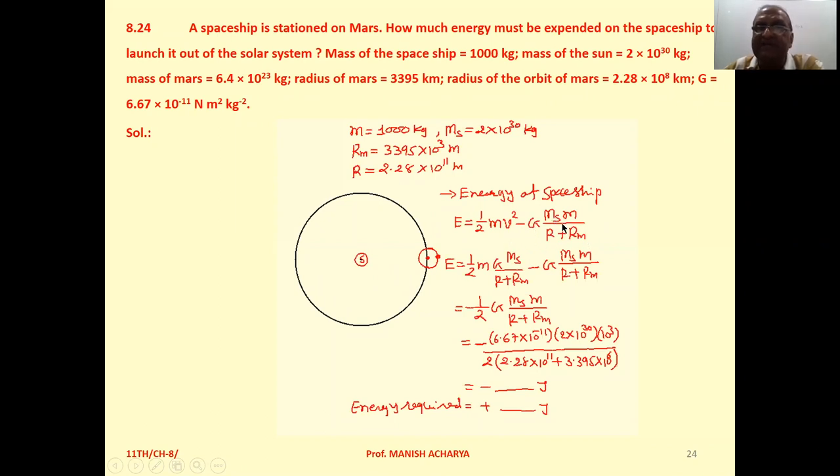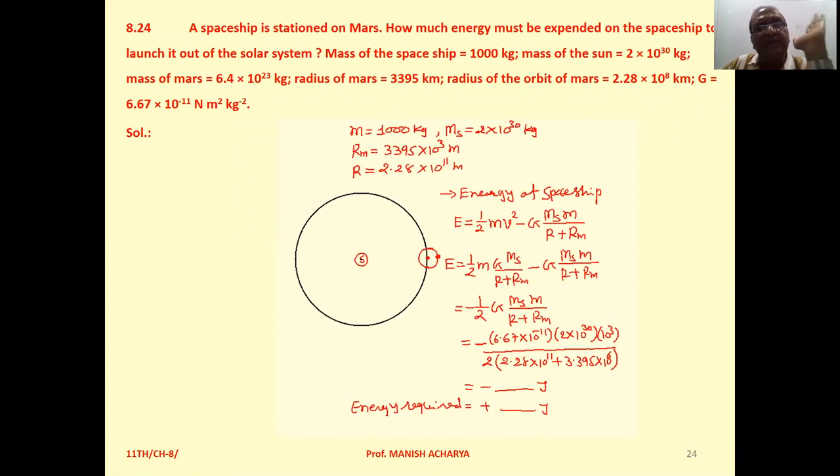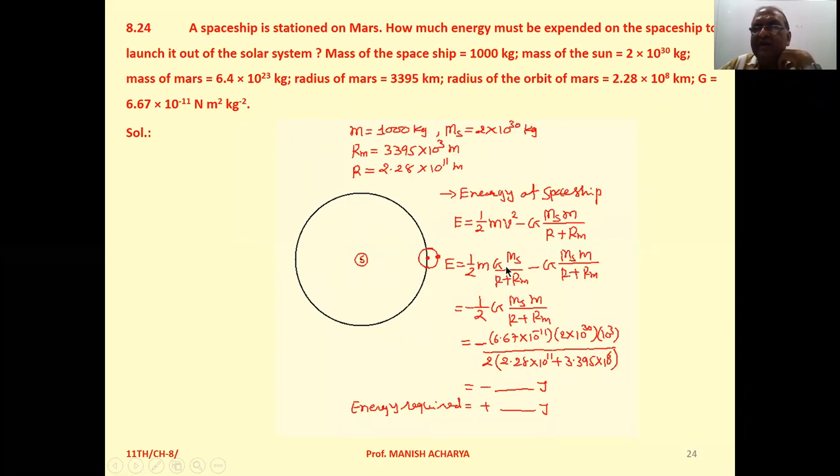That is minus GMₛm upon r plus rₘ, minus GMₘm upon rₘ. For the total energy in the solar system, the energy is minus GMₛm upon r plus rₘ.